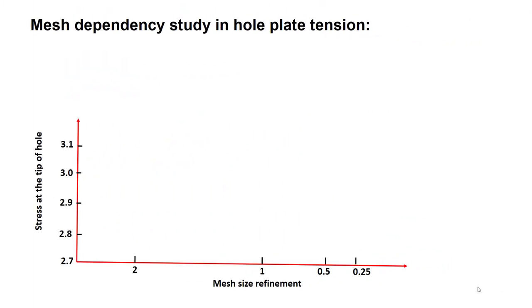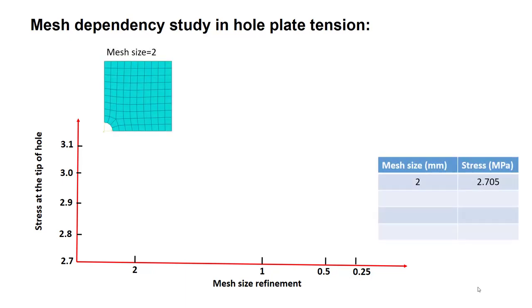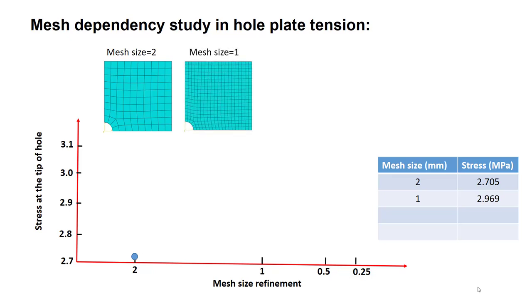For this problem, we first start with a coarse mesh size of 2 millimeters and calculate the stress at the tip of the hole — the stress is 2.7. Then we reduce the mesh size by half and calculate the stress one more time. In the next step, we calculate the stress with a mesh size of 0.5.